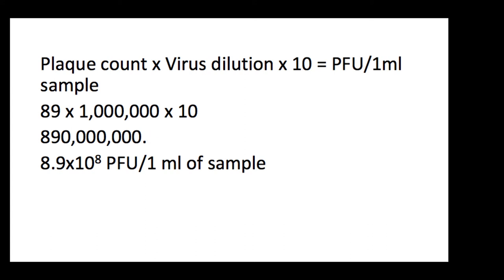And then, move your decimal point over. So, in this case, we're going to move it over 1, 2, 3, 4, 5, 6, 7, 8 times because we have to get a number between 1 and 9. So, we would have 8.9 times 10 to the 8 PFU per 1 milliliter of sample.